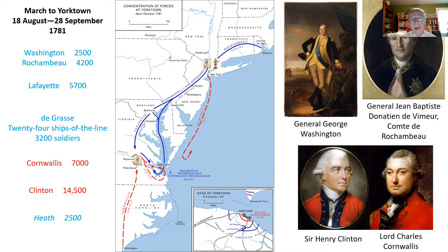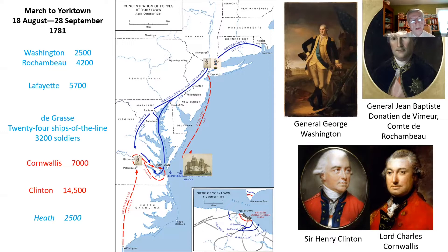The whole object here is to gain numerical superiority in Virginia over the British. Rochambeau and Washington also knew that a French fleet was bound for America by the autumn from the Caribbean under the Count de Grasse — 24 ships of the line, the battleships of the time. And de Grasse had about 3,200 French soldiers. So the whole object is to gain numerical superiority in Virginia over the British, both on land and by sea.